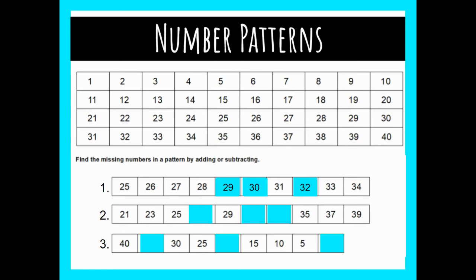At number two I see two really good grouped-together sets of numbers. I see 21, 23, 25 here, but I also see at the end three numbers grouped together: 35, 37, 39. I'm going to focus on the first part of the pattern — 21, 23, 25 is a growing pattern, it's getting bigger.